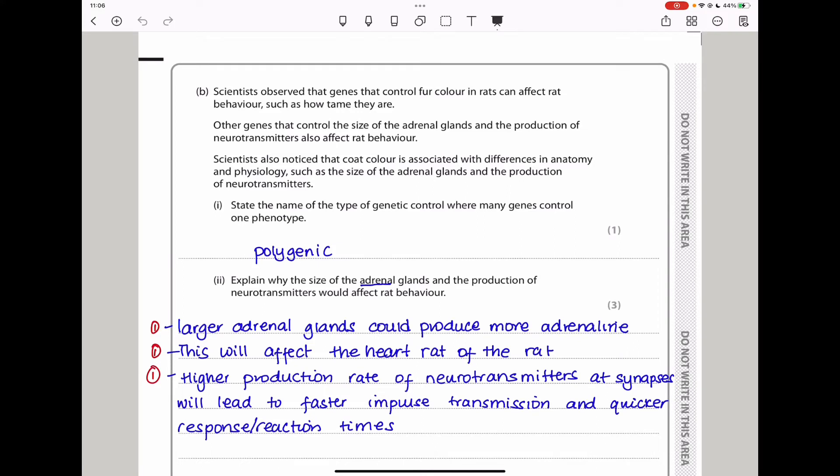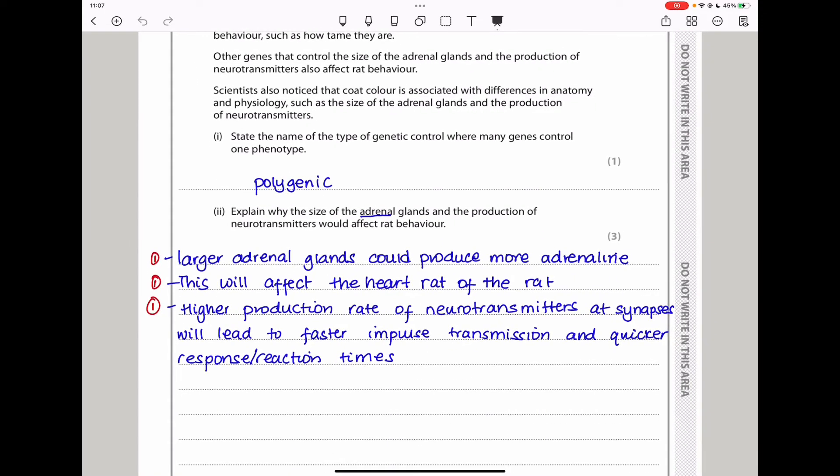Here they say, scientists observed that genes that control fur color in rats can affect rat behavior, such as how tame they are. Other genes that control the size of the adrenal glands and the production of neurotransmitters also affect rat behavior. Scientists also noticed that coat color is associated with differences in anatomy and physiology, such as the size of the adrenal glands and the production of neurotransmitters. Say the name of the type of genetic control where many genes control one phenotype. This is a polygenic trait, or you could say it's polygenic.